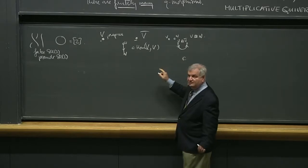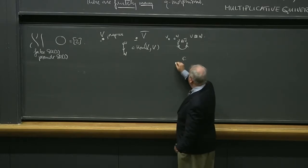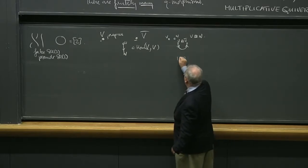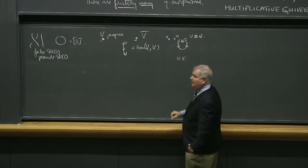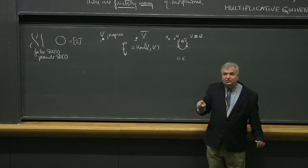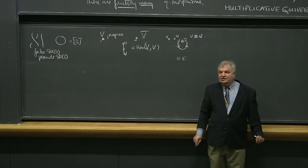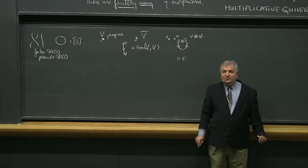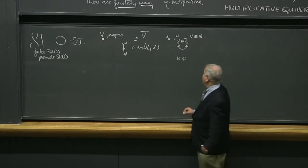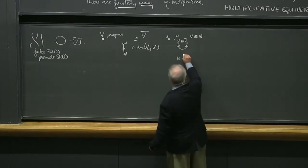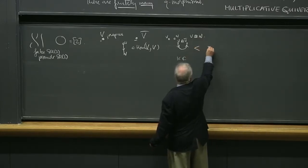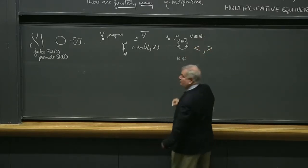Now we should evaluate this: you put V and V-bar together and get a scalar — that's the scalar product, just the inner product. The linear dual of that map sends a scalar 1 into the sum of psi tensor psi-bar, which by convention means the sum over an orthonormal basis — it's the identity operator.